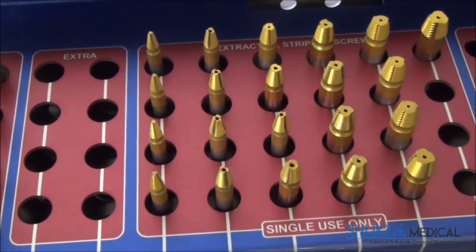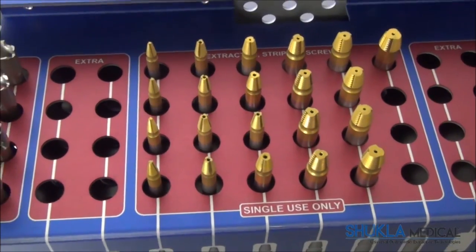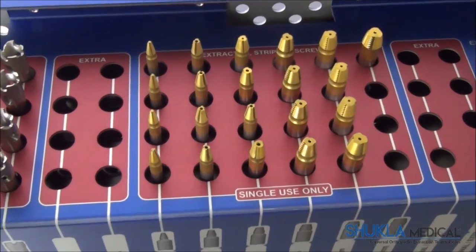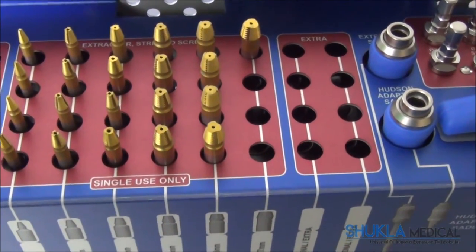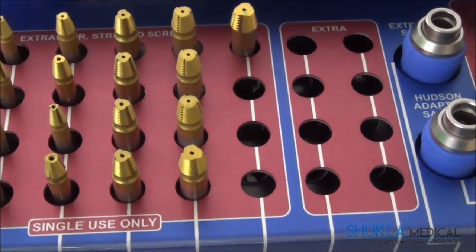To the right of them are the stripped screw extractors arranged from the smallest size 2 mm to the largest 7 mm. Each extractor is capable of removing slightly smaller and larger sizes.